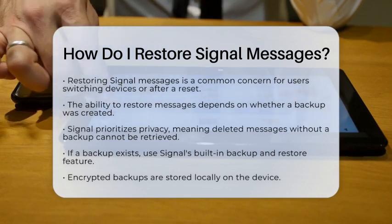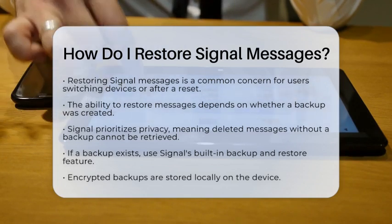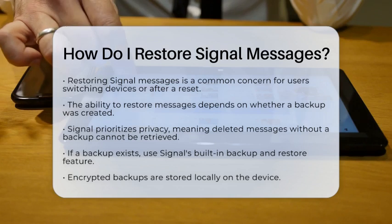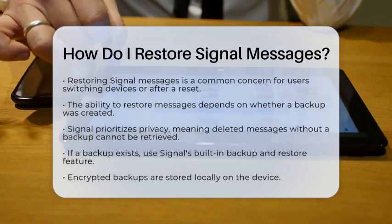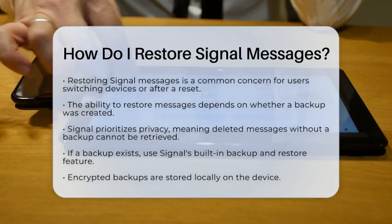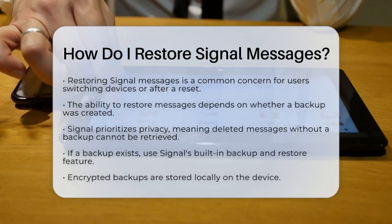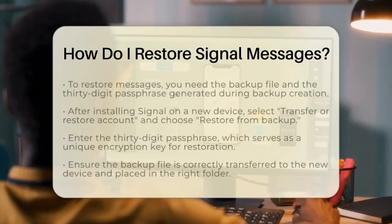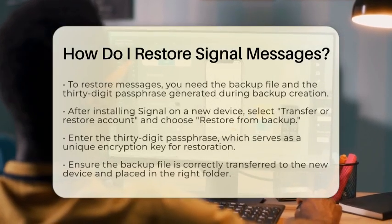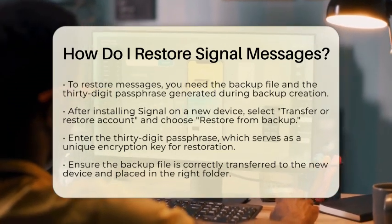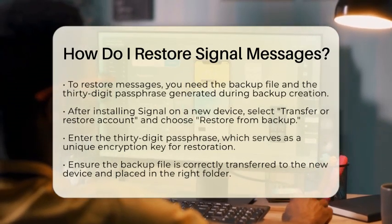Signal allows you to create encrypted backups of your messages stored locally on your device. To restore messages on a new or reset device, you will need the backup file and the 30-digit passphrase generated when you created the backup. After installing Signal on your new device, select 'Transfer or Restore Account,' then choose 'Restore from Backup' and enter the 30-digit passphrase.